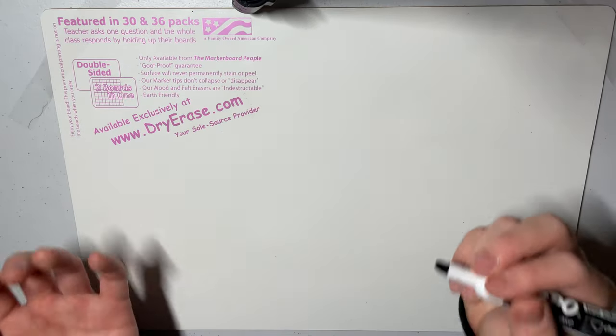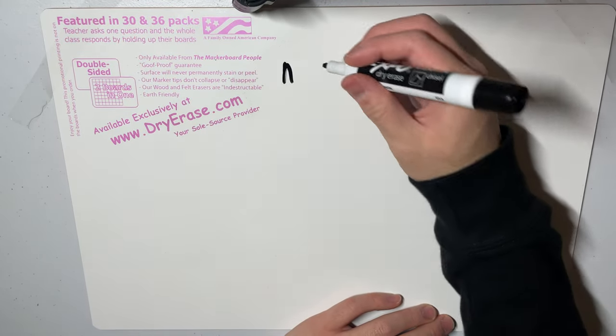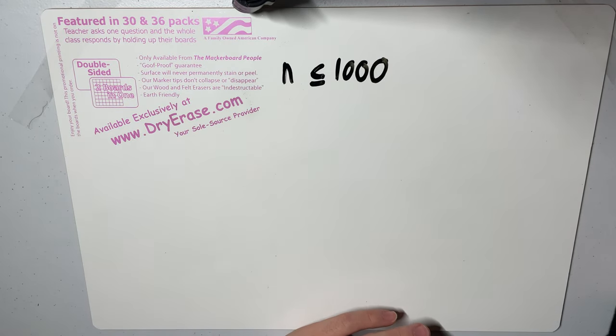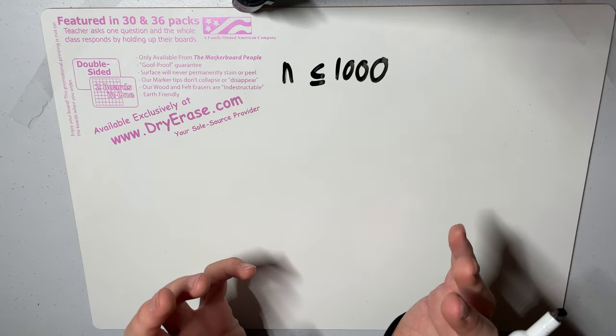And here's the reason why: if we let n be the length of a string, we're given that n is less than or equal to a thousand. This means that n has...